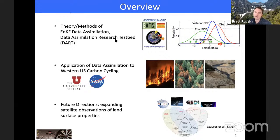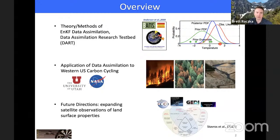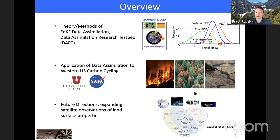The idea is that in order to perform better model forecasting, you start off with some prior estimate, include observations, and produce a posterior or improved estimate. I'll describe an application of this system across the Western U.S., a project I was involved with at the University of Utah. The Western U.S. is an interesting area because of disturbance issues related to fire, insect infestation, and drought — similar in some ways to the Arctic, which is also prone to disturbance with implications for the carbon cycle.